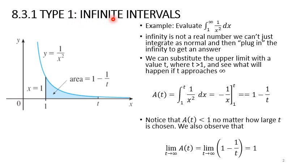Type 1 is the infinite interval. For example, let's say we want to evaluate the integral from 1 to infinity of the function 1 over x squared with respect to x. Infinity is not a real number, so we cannot just integrate as normal and then plug in the limit as infinity to get the answer.